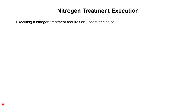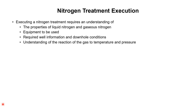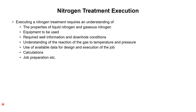Here we will talk about the nitrogen treatment execution. Executing nitrogen treatment requires an understanding of the properties of liquid nitrogen and gaseous nitrogen, equipment to be used during nitrogen operations, required well information and downhole conditions, understanding of the reaction of the gas to temperature and pressure, use of available data for design and execution of the job, calculations involved in the nitrogen treatment, and job preparations. So if we want to execute a nitrogen treatment in a successful manner, we need to have an idea about all these parameters and concepts. We will discuss all these concepts one by one in our upcoming tutorials.